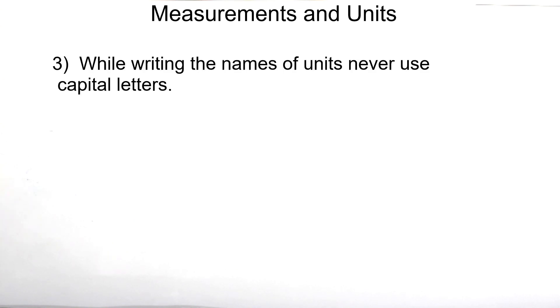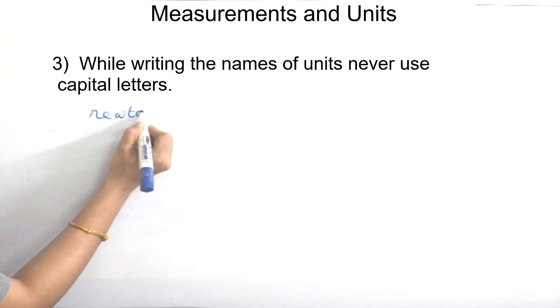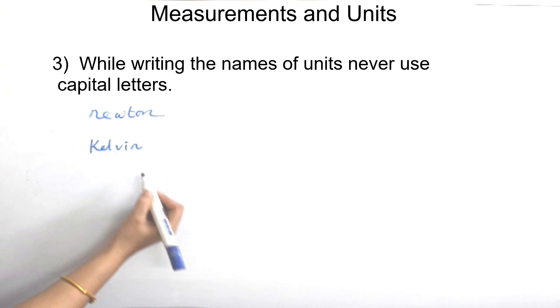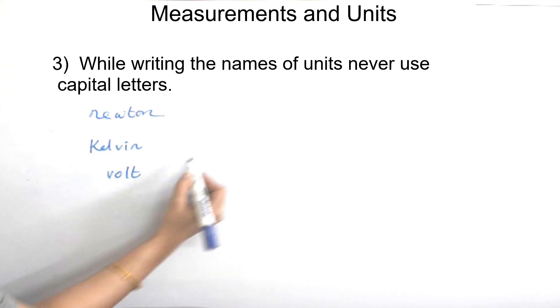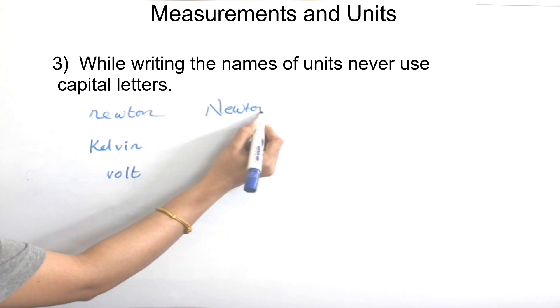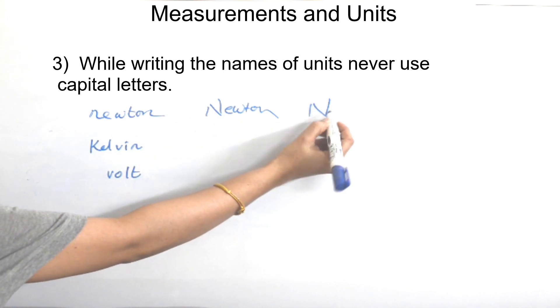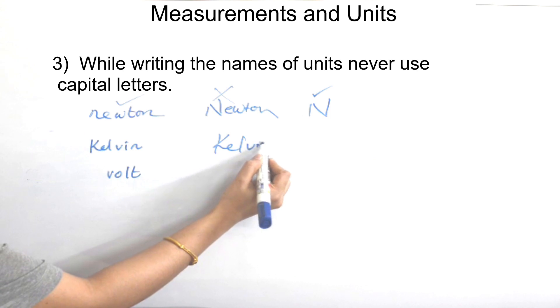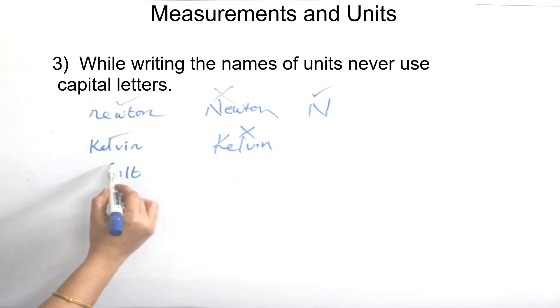Rule 2: symbols of units named after scientists are written in capital letters — V for volt, Pa for pascal, N for newton. Rule 3: the name of the unit itself is written in lowercase (e.g., newton, kelvin), but the symbol is written in capital — N for newton, K for kelvin. It is not written as a small letter.